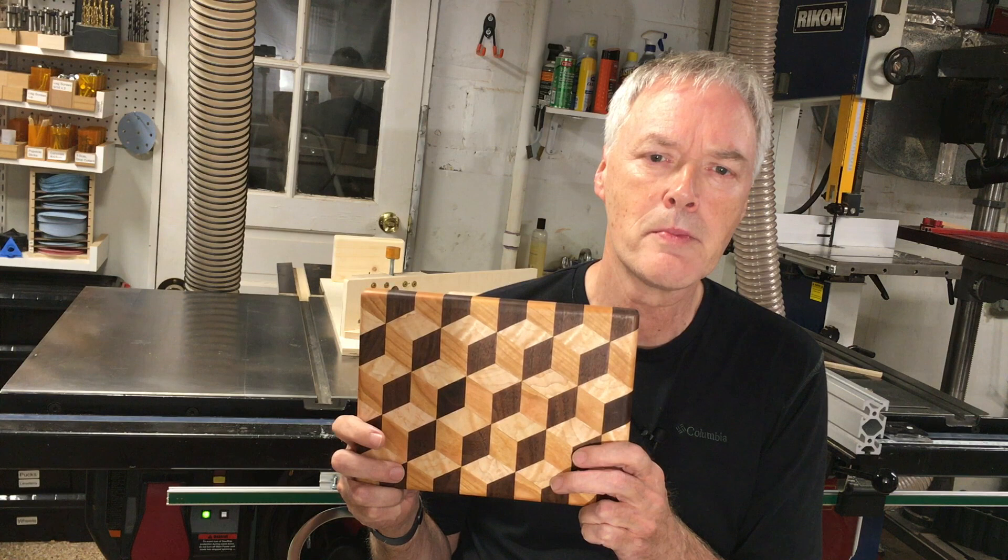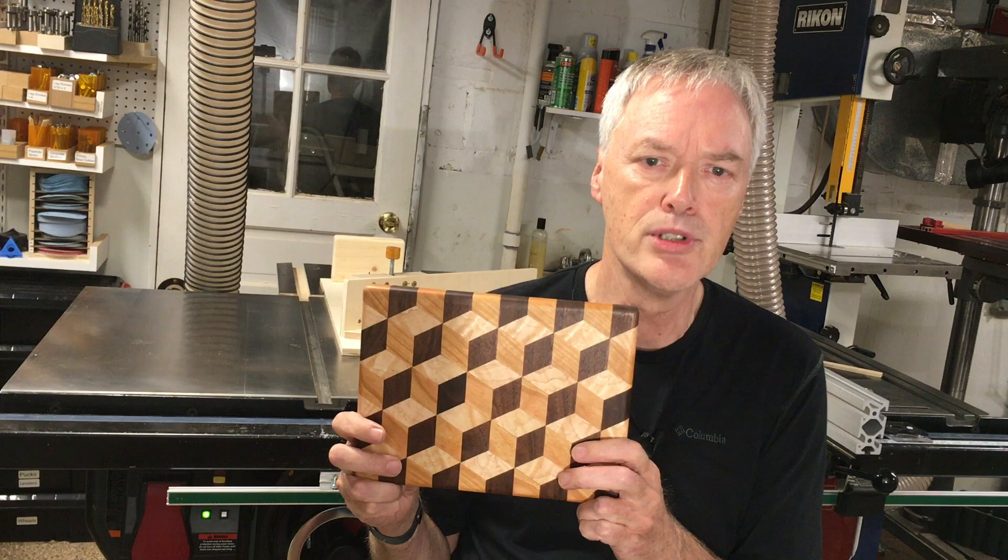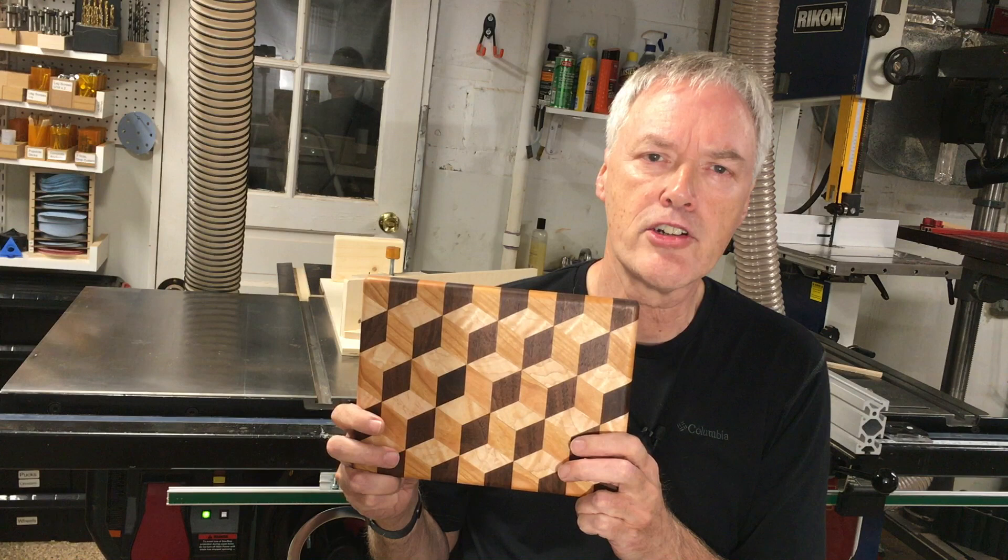This cutting board has a flat surface but features a design that gives the illusion of three-dimensional cubes. This technique was popular in Louis XIV furniture, so these cubes are known as Louis Cubes. You'll also see them called tumbling blocks.